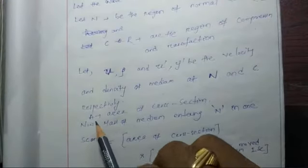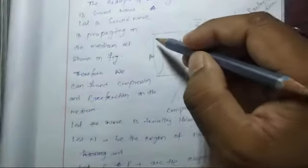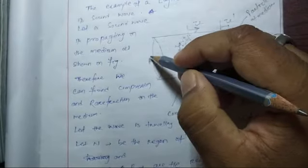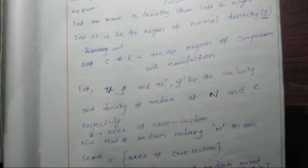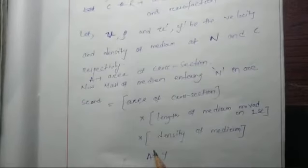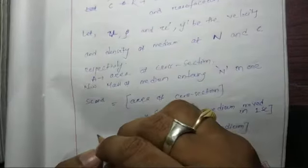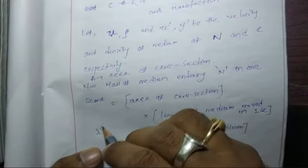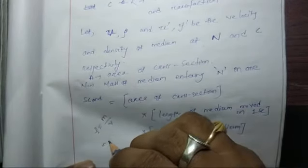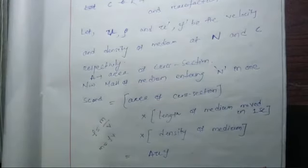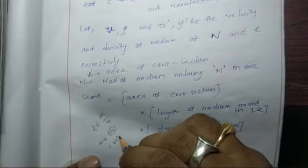Let A be the area of cross section of this bar. The mass of medium entering N in one second depends on: the area of cross section, the length of medium moved in one second, and the density of the medium. We know that density ρ = M/V, so mass M = ρ × V. Here V is nothing but area × length × ρ.